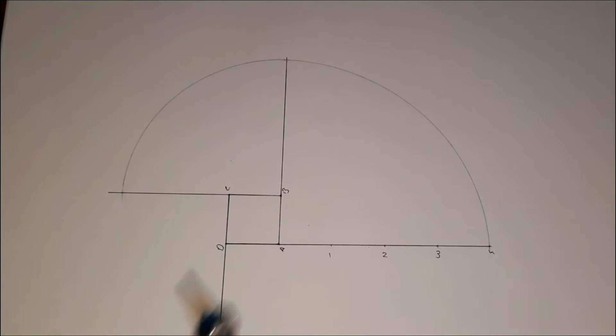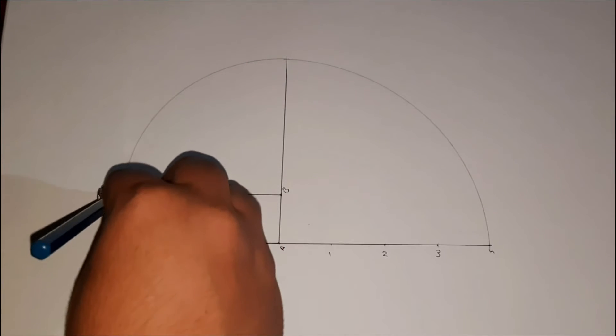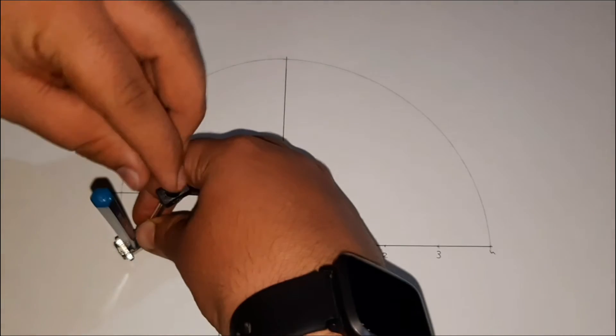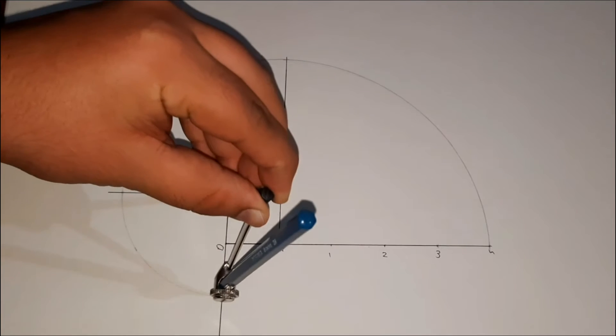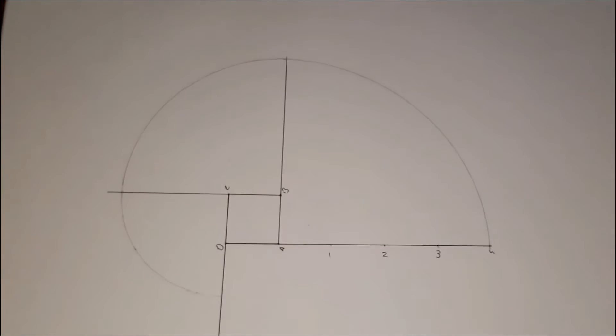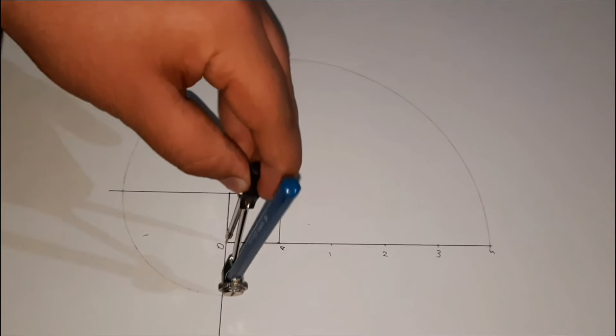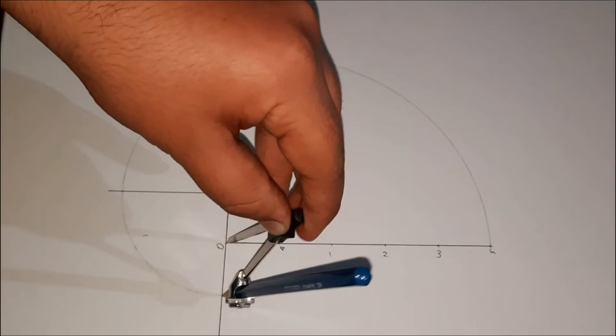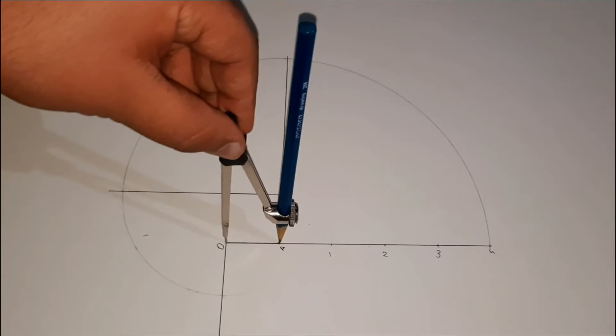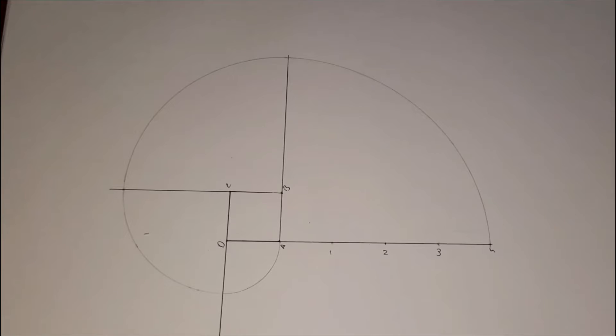Now taking A2 as radius and C as center, we will make an arc over here. Now taking A1 as radius and D as center, we will repeat the same at this point. Here the involute of square is ready.